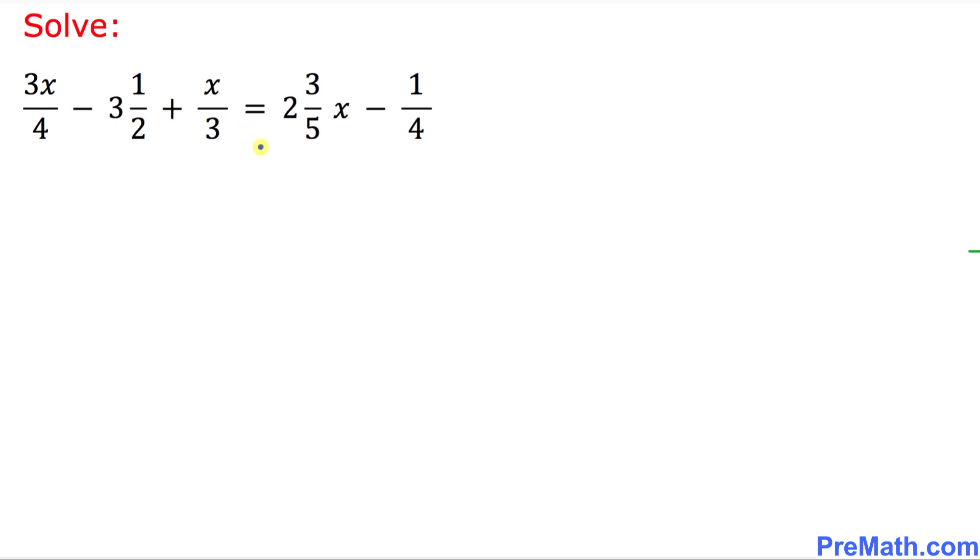The very first step we can see is that we have some mixed numbers over here like three and a half and two three-fifths.